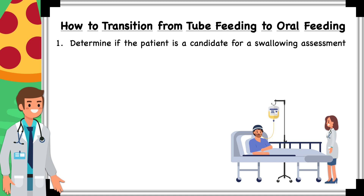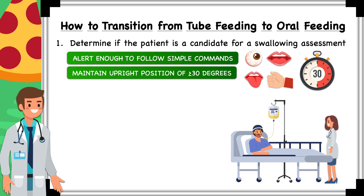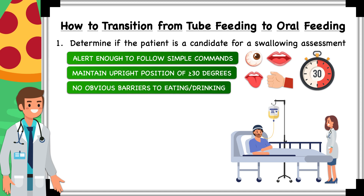Generally speaking, a patient is considered a good candidate for a swallowing assessment if they have periods when they're alert enough to follow simple commands like opening and closing their eyes and mouth, sticking out their tongue, and tightening their grip when asked to. They're also a good candidate if they can maintain an upright position of at least 30 degrees for at least 30 minutes at a time, and if there are no obvious barriers to eating or drinking, such as an impending procedure requiring a fasted state, imminent intubation due to compromised respiratory function, or a medical condition or recent surgery that temporarily prevents use of the gastrointestinal tract.